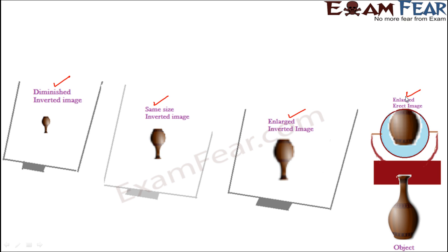What is a real image? A real image is formed when the reflected rays actually meet, and a virtual image is formed when the reflected rays appear to meet. Another way to identify: whenever you have a real image, it can always be obtained on the screen, because the real image is always formed on the same side as the object — since the reflected rays are actually meeting on that same side.